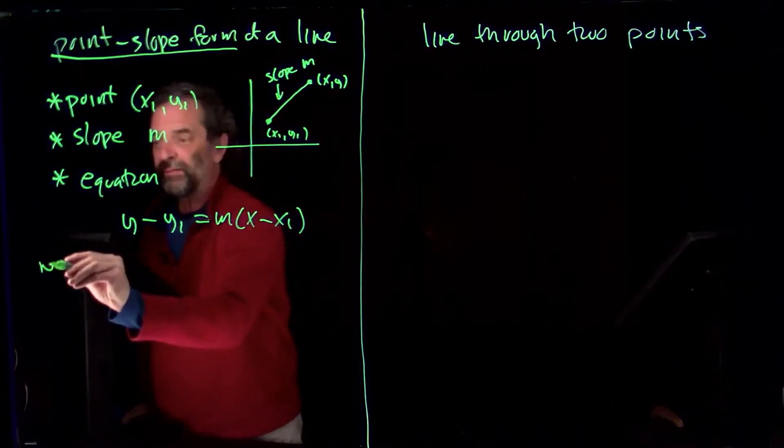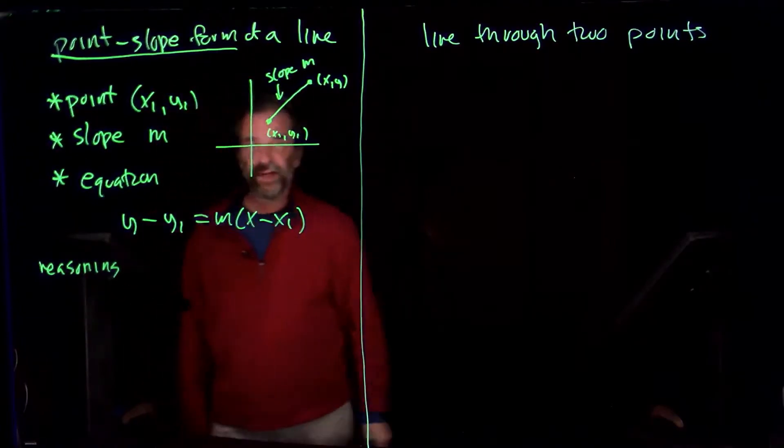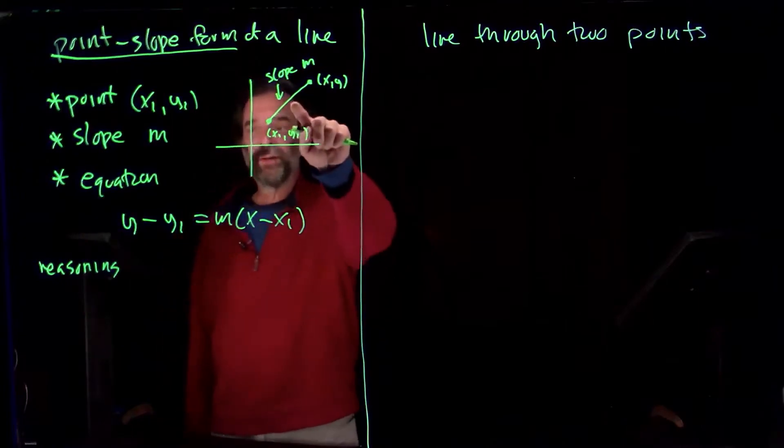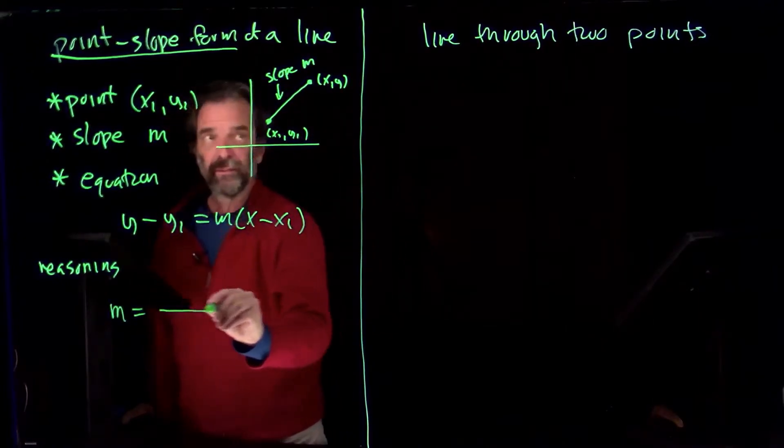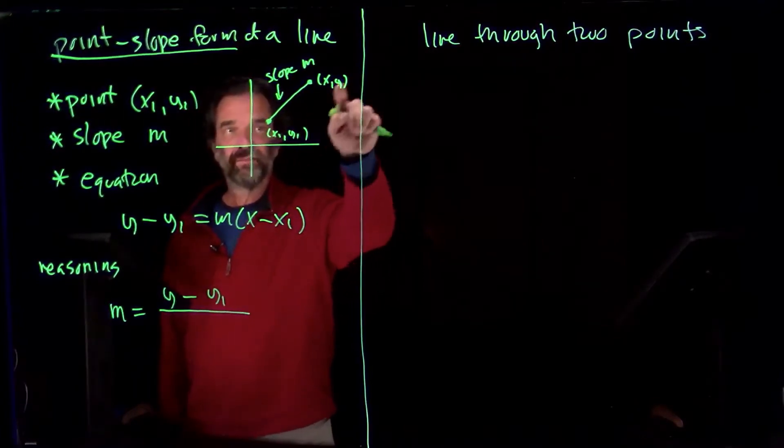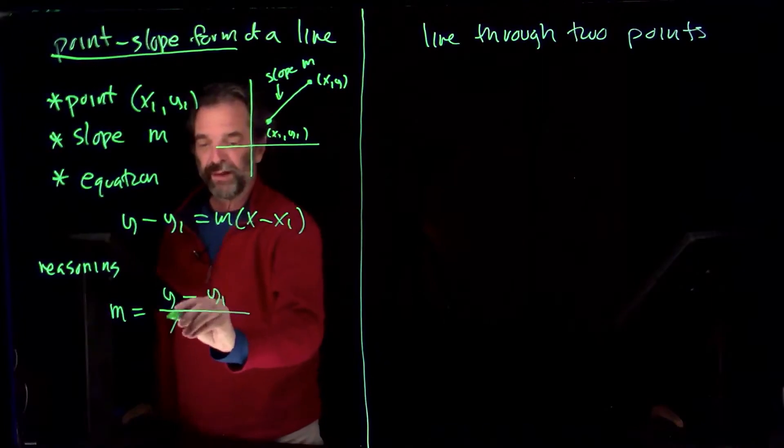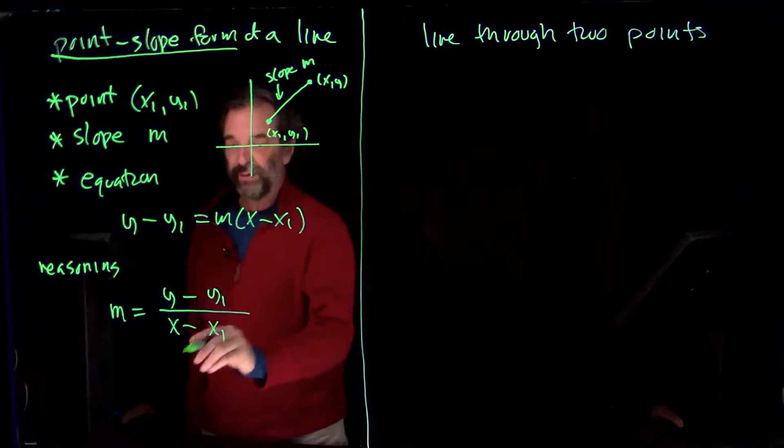And the reasoning, it's like the slope-intercept form. We'll just compute the slope of this line segment. So we'll go y minus y₁, that's the difference of the y's, over x minus x₁, like that. And we'll just multiply both sides by x minus x₁.